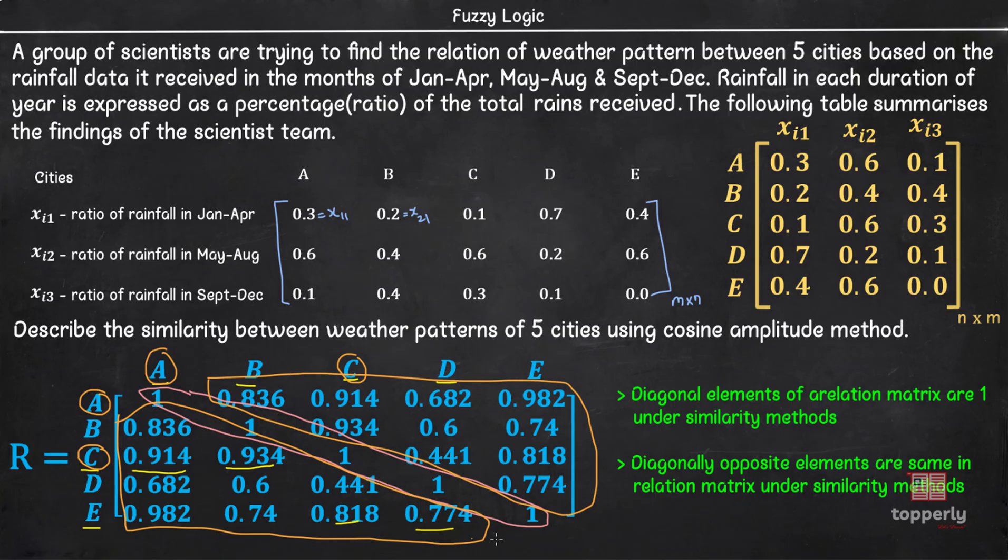Also, as you can see, R has all the diagonal elements as 1 and is a symmetric matrix. Hence, as we learned in the last video, R is a tolerance relation.